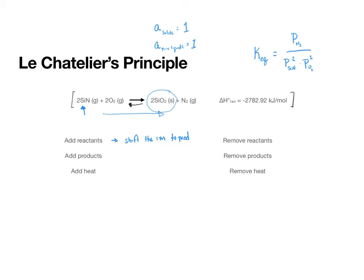Now, if we do the reverse, if we add products, let's add N2, we would expect the reaction to shift towards reactants. Because if we add more products, this reverse reaction is going to dominate and we're going to shift backwards.